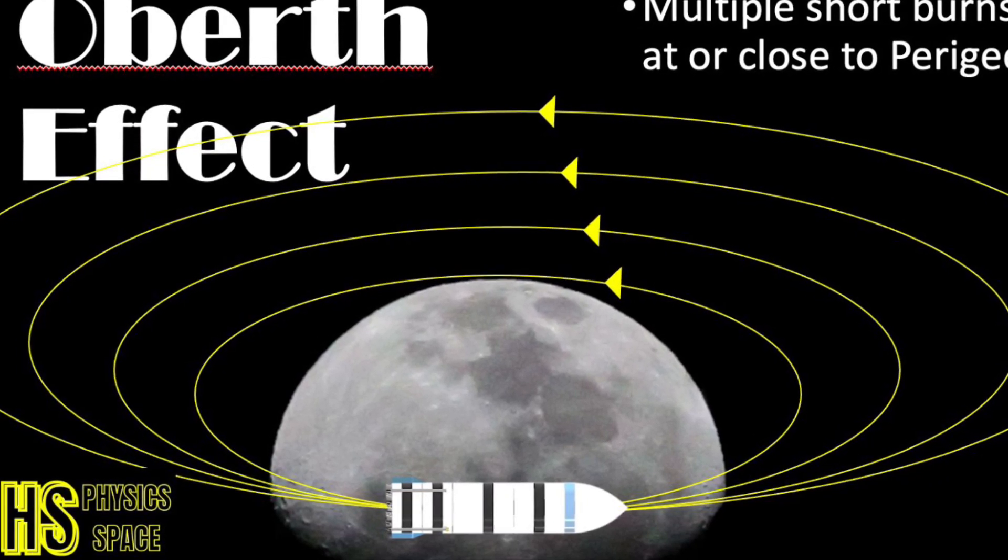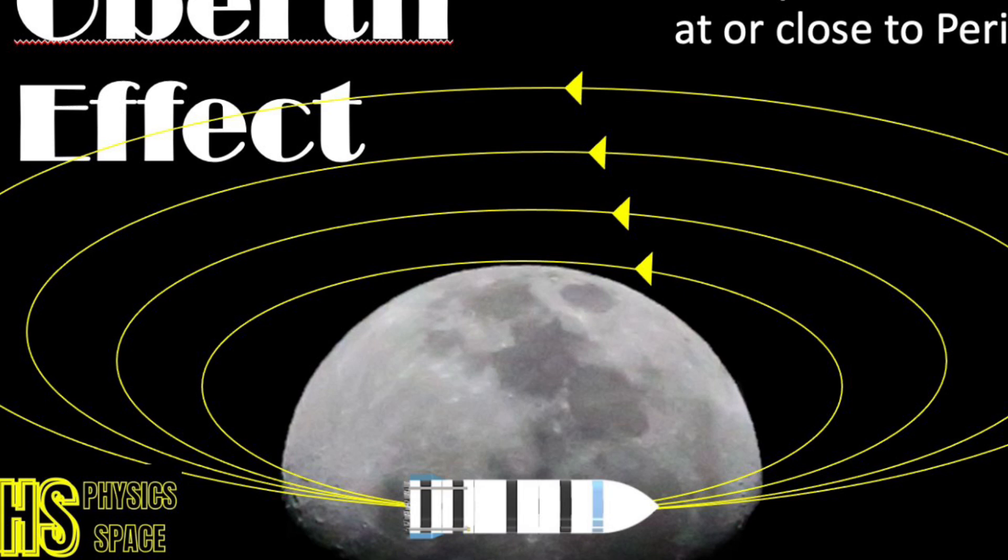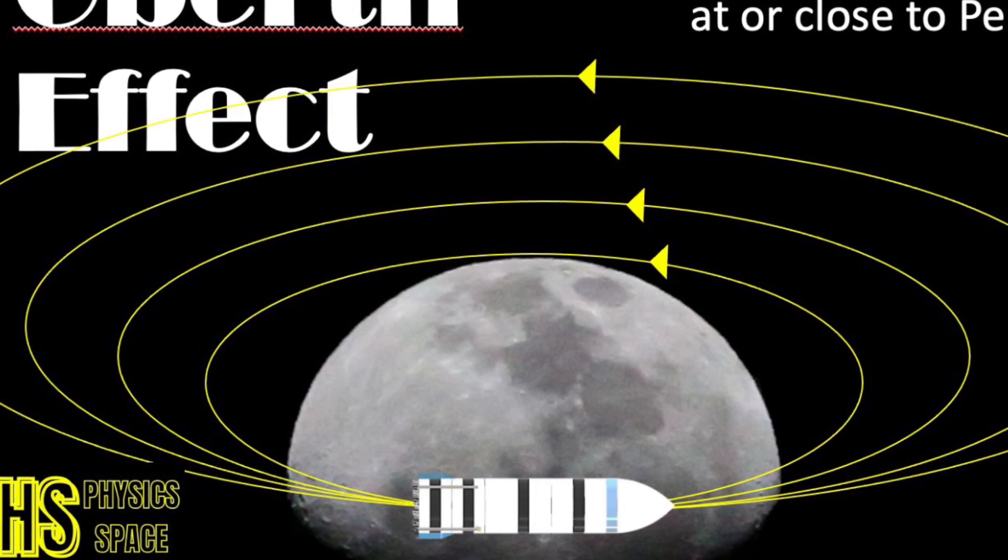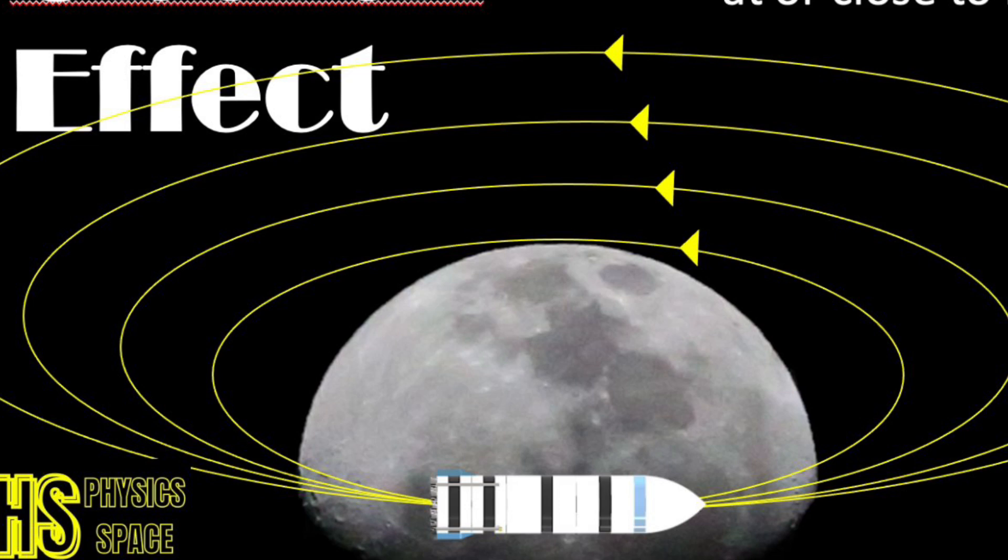So what is the Oberth effect? How does it affect space travel, particularly traveling to other planets or the moon? And how does it not defy the law of conservation of energy?